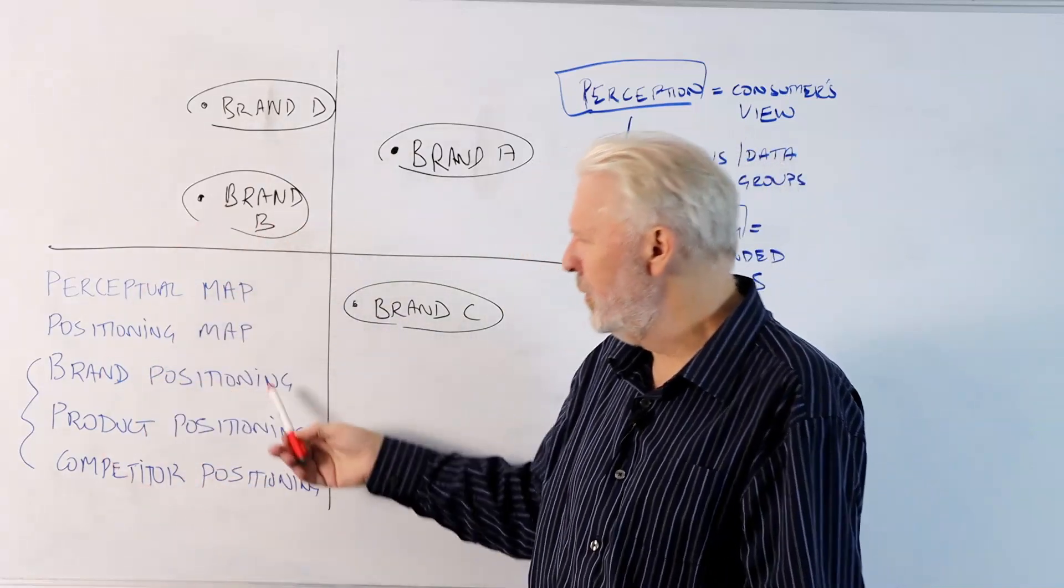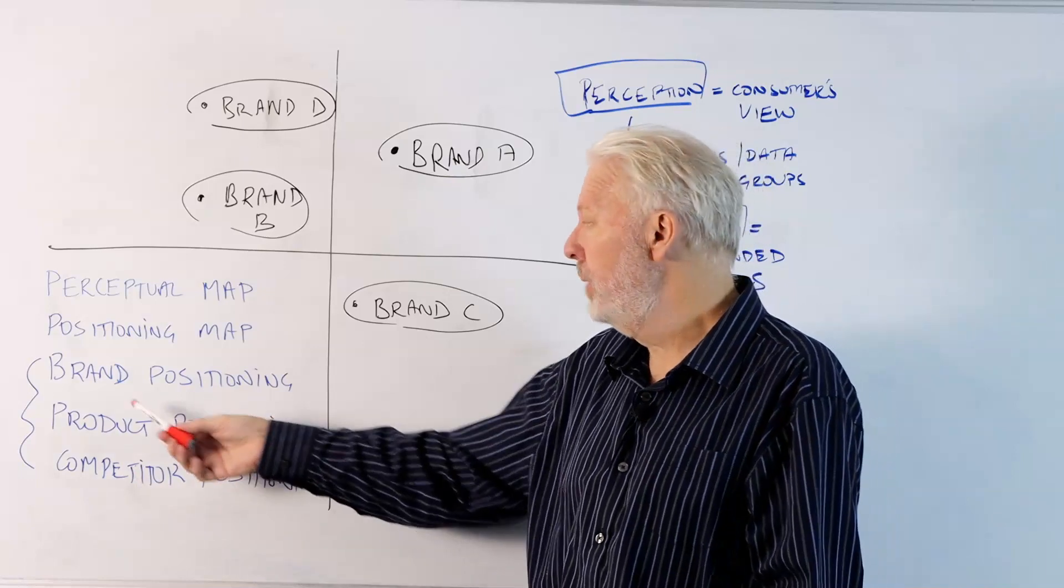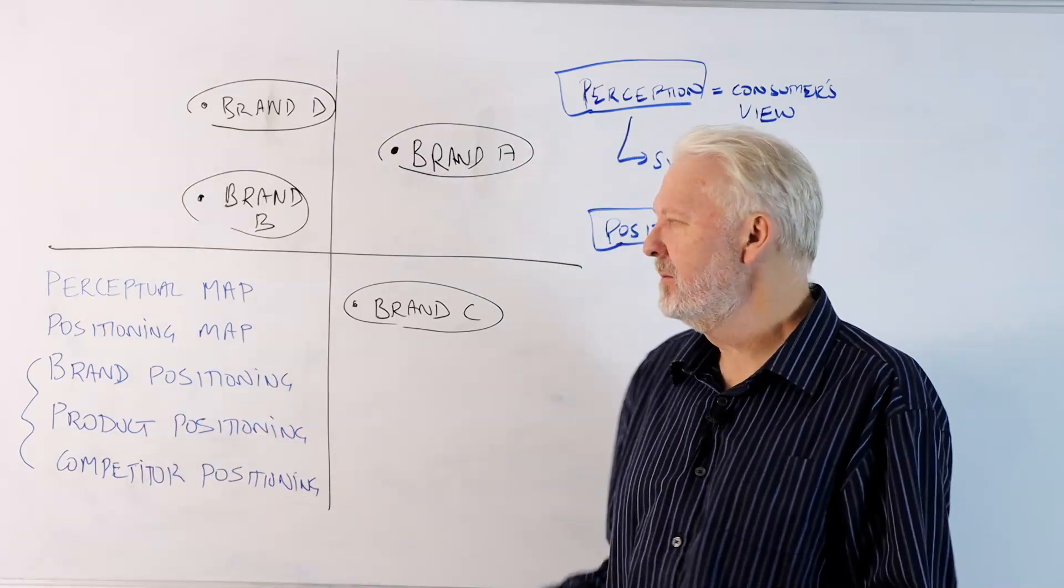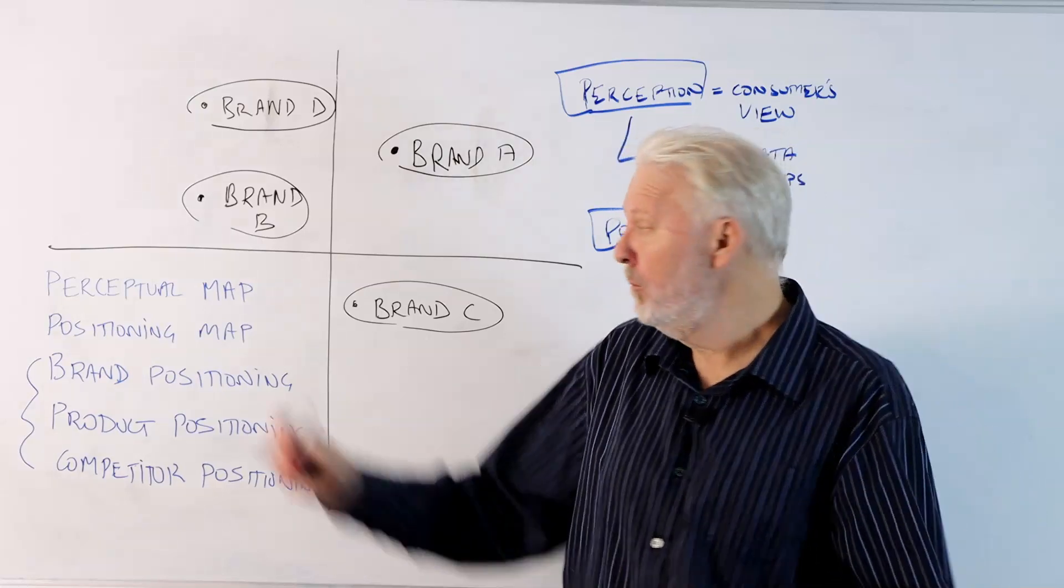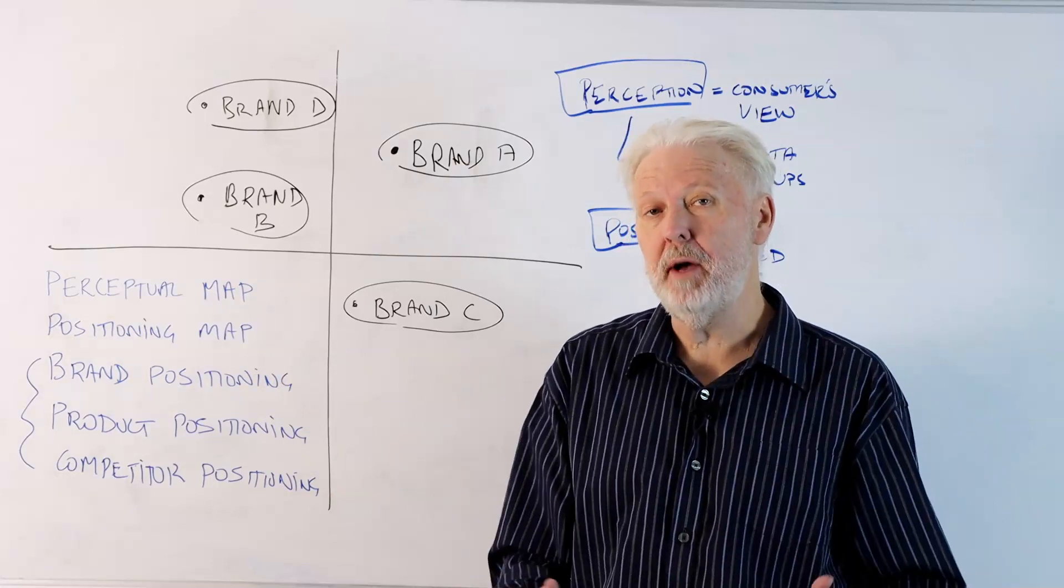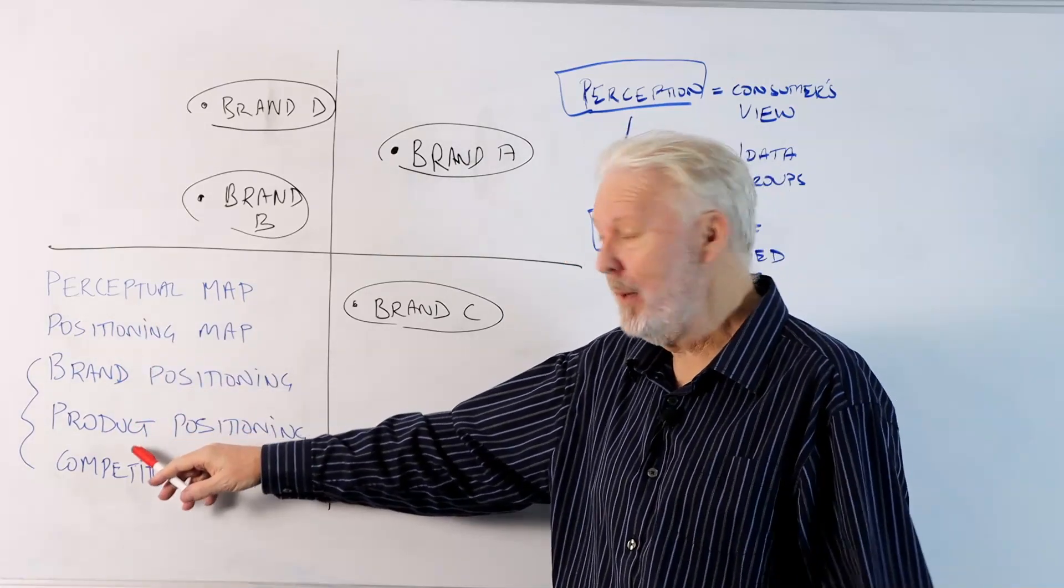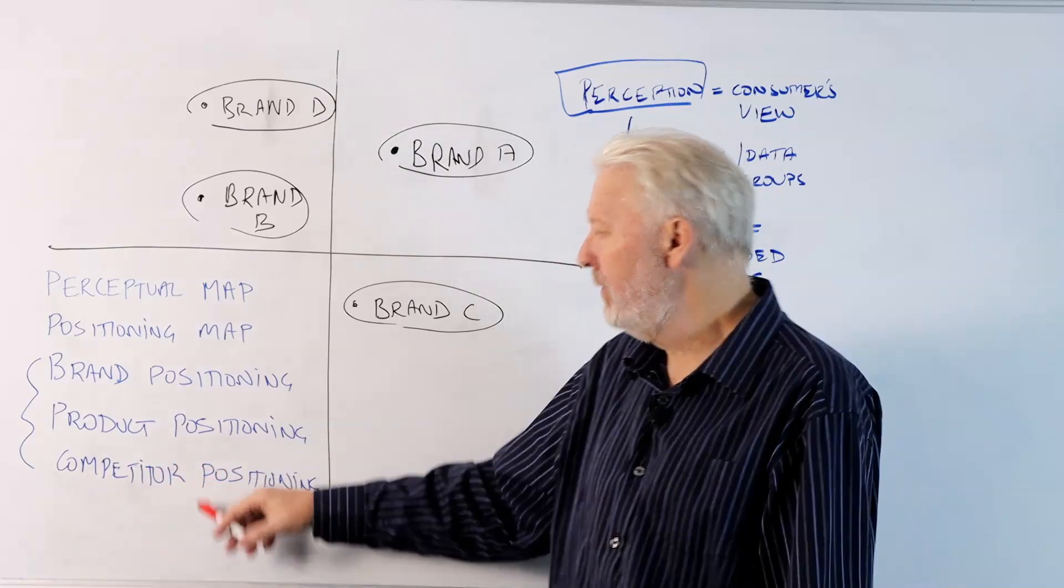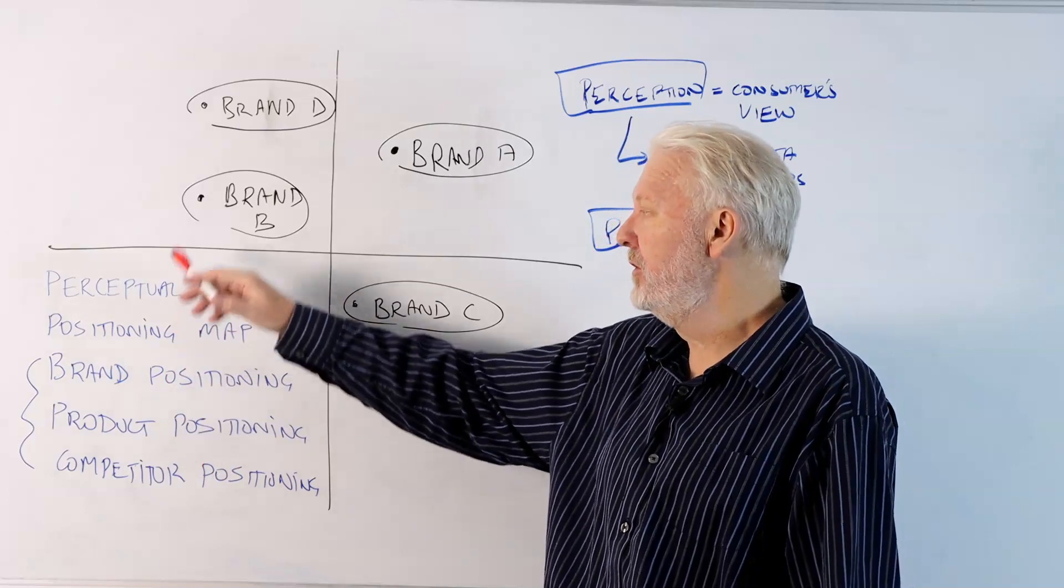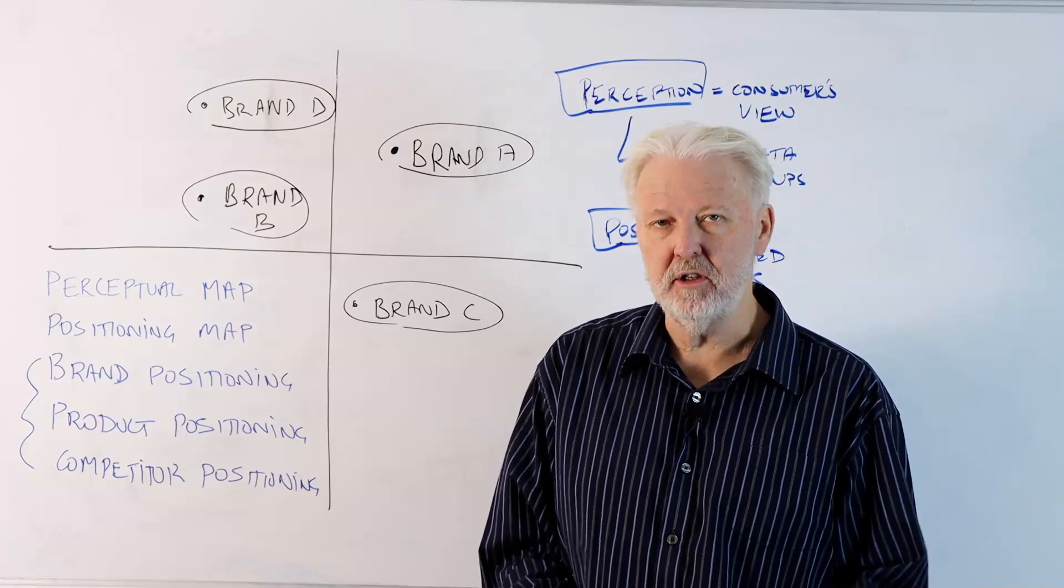The other thing I want to talk about is often we hear other interchanging terms: brand positioning, product positioning, competitive positioning. These again will relate to one of these. They're either going to be perceptual based, consumer based, so we can map brands, we can map individual products, and we obviously map competitors as well. How they're mapped depends on customers, or based on management goals and strategies.